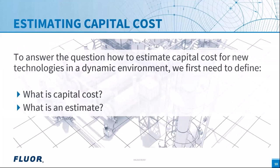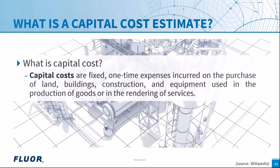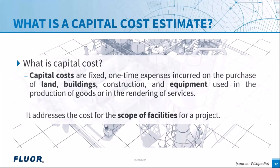The first definition to address is what is capital cost. Looking at Wikipedia, capital cost is described as the fixed one-time expenses incurred on the purchase of land, buildings, construction, and equipment used in the production of goods or in the rendering of services. Key words here are land, buildings, and equipment — in our terminology, these represent the scope of facilities: things we need to construct which remain at the end of the project.